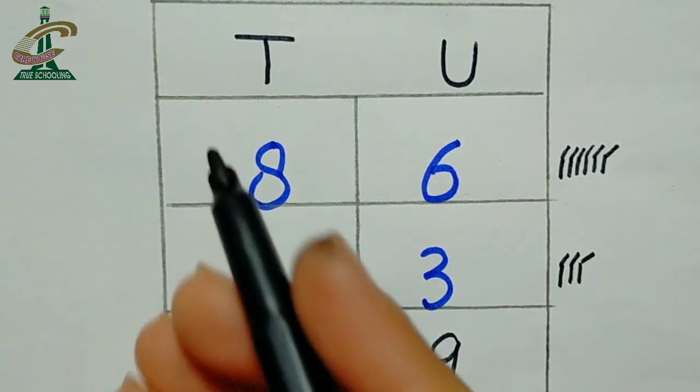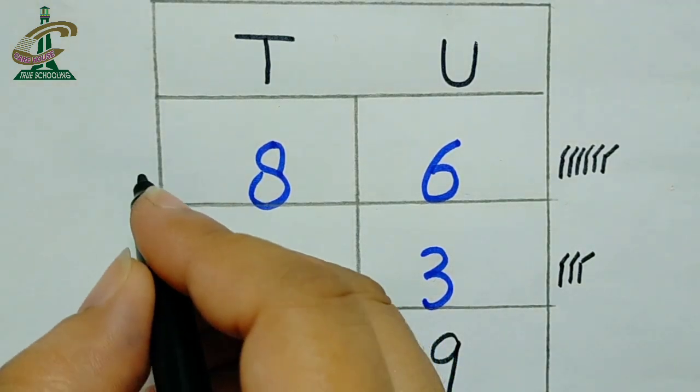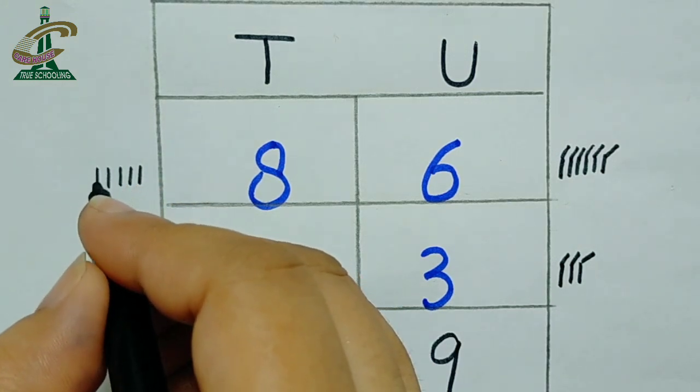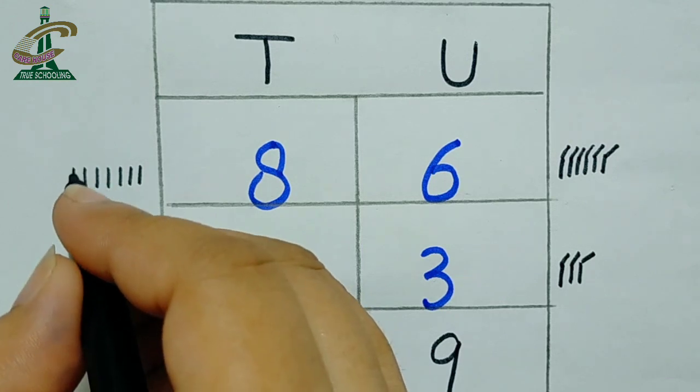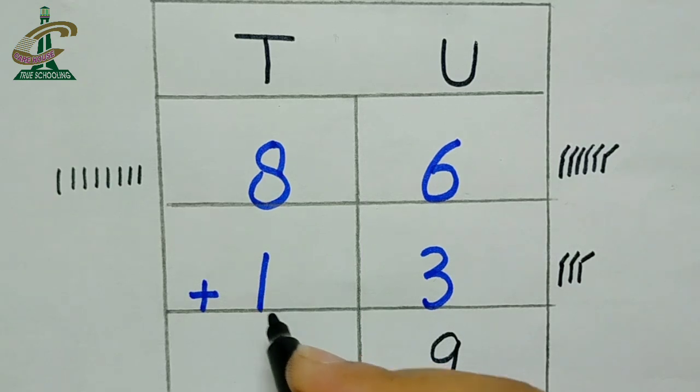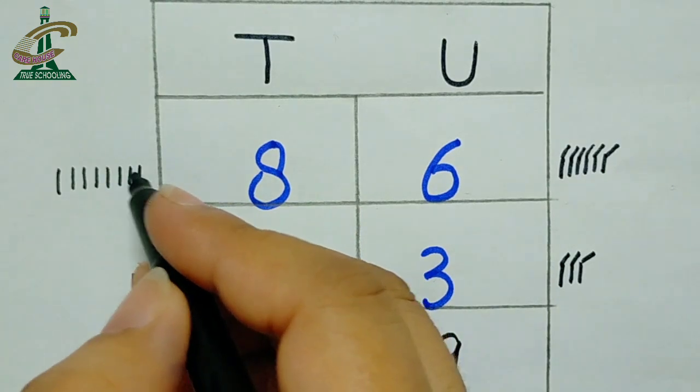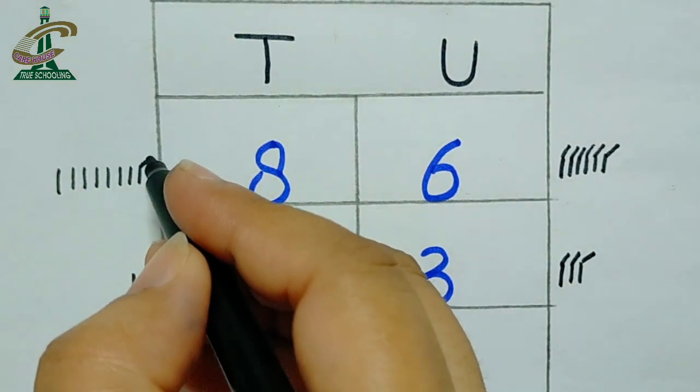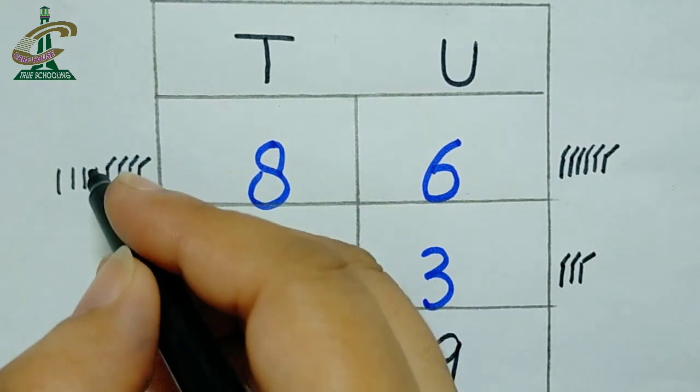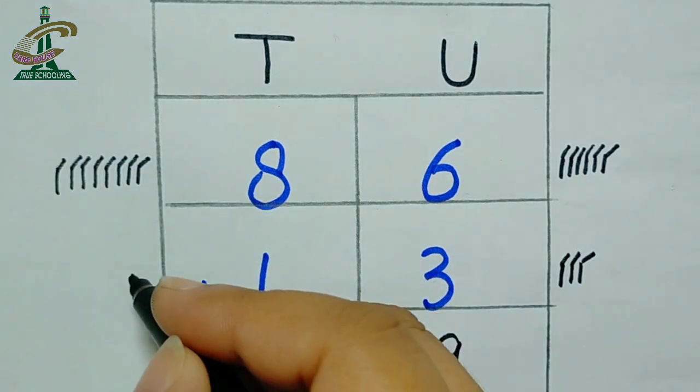Come to the 10th number. The number is 8. How many lines you will draw? You will draw 8 lines. 1, 2, 3, 4, 5, 6, 7 and 8. And downside, there is a number only 1. How many lines? Only 1. Count these numbers with me students. 1, yes, 2, 3, 4, 5, 6, 7, 8 and 9.